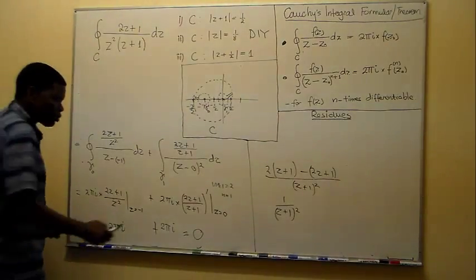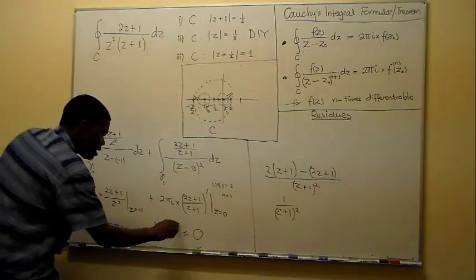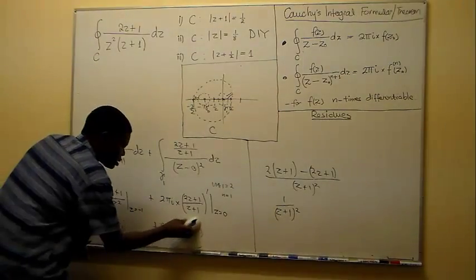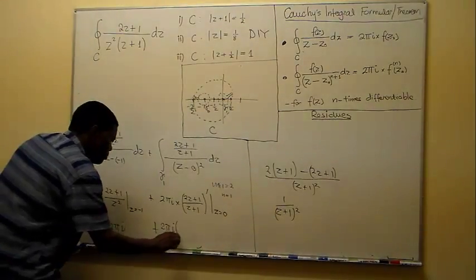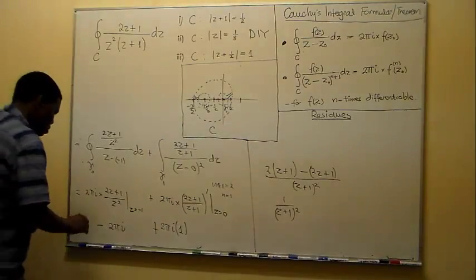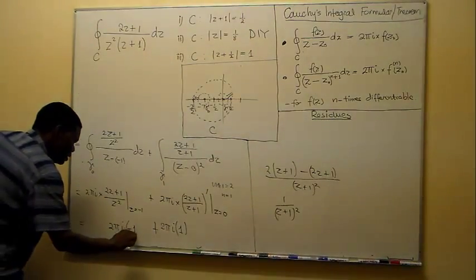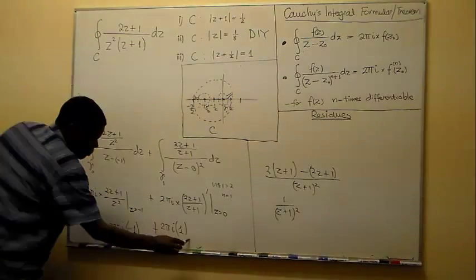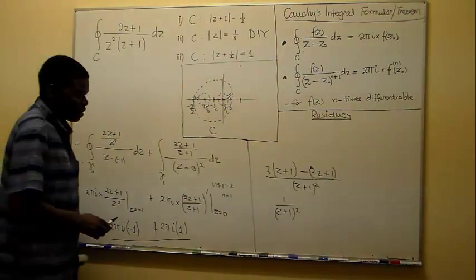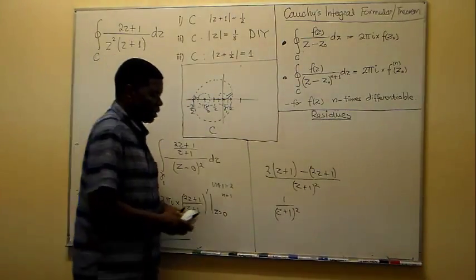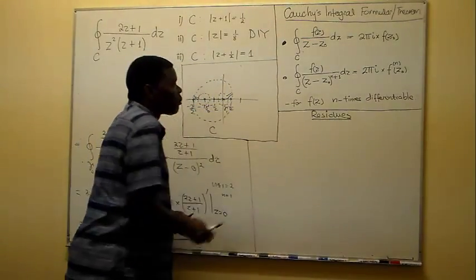Let me clean that up: the first term was 2πi multiplied by 1, and the second term was 2πi multiplied by minus 1. I want to make those things clear because I'm going to do another verification using the residue theorem.